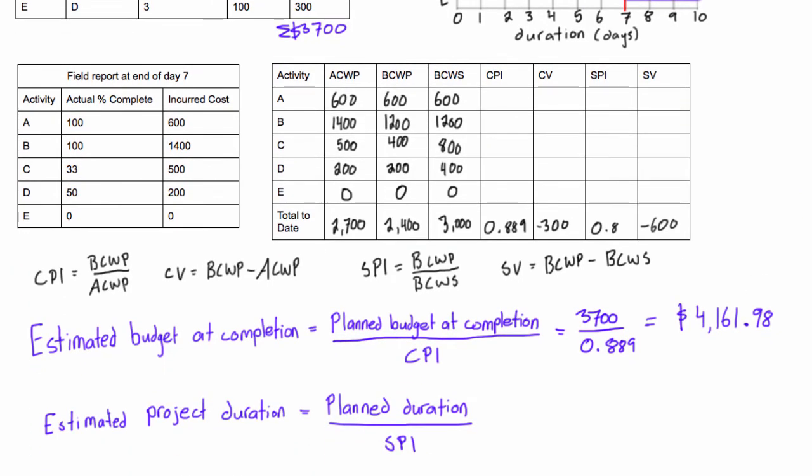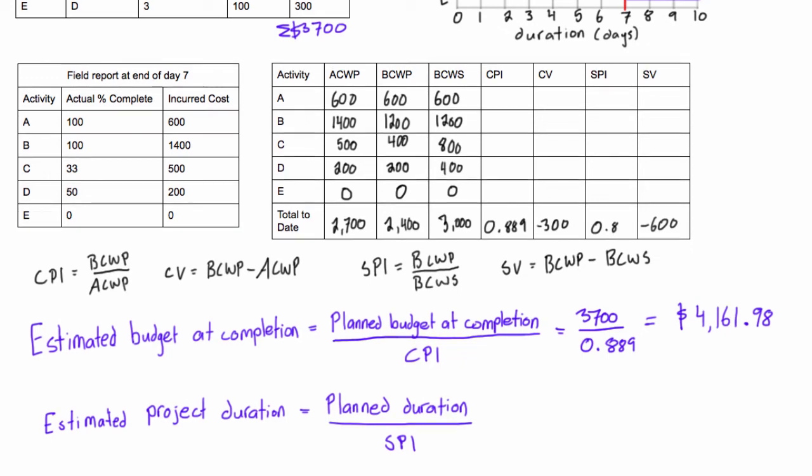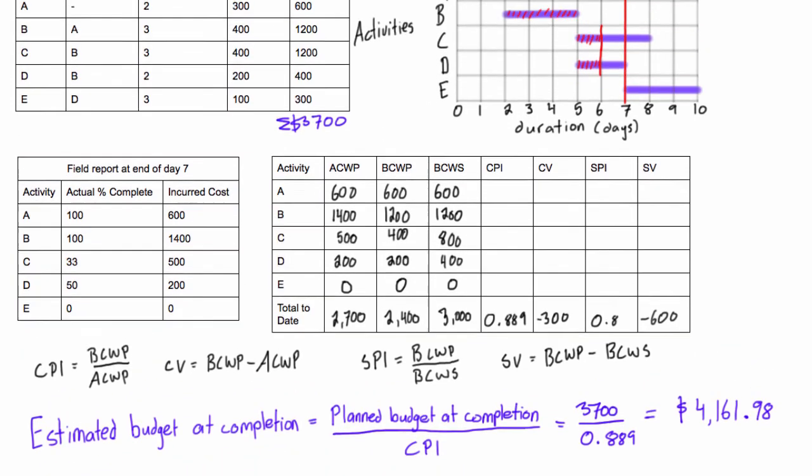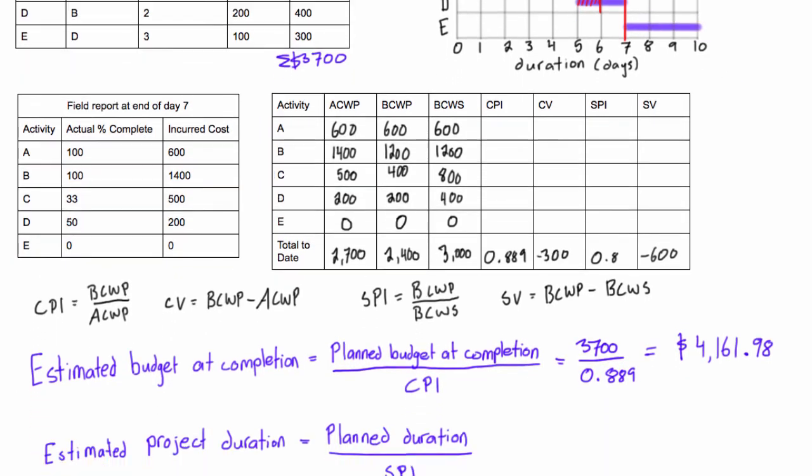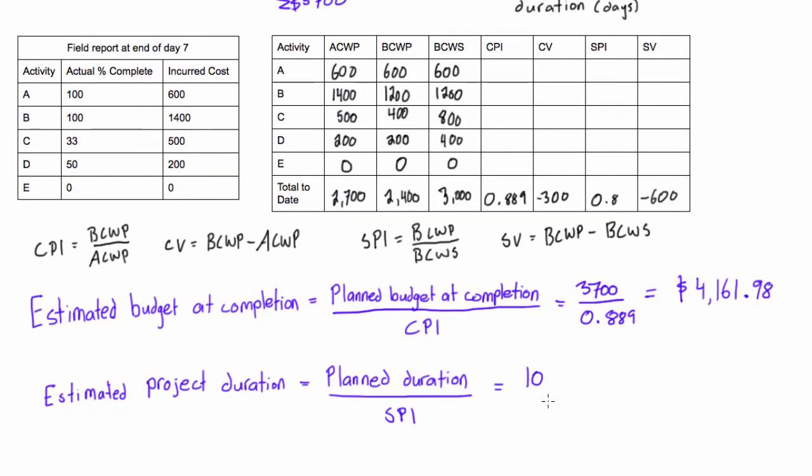So the next thing to look at is the estimated project duration. We just need the planned duration over the SPI. The planned duration we can figure out by doing a PDM network diagram or we can also use a Gantt chart. We're seeing here that our planned duration is to be 10 days. If everything goes as planned we'll be at 10 days, but it looks like something might happen that we might not be hitting that.